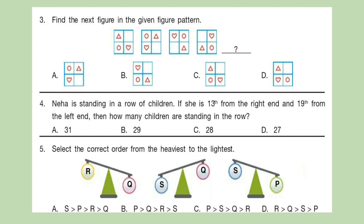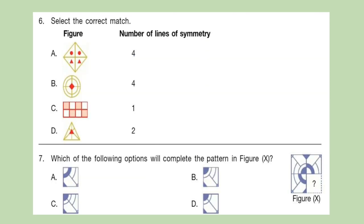Question 4: Neha is standing in a row of children. If she is 13th from the right end and 19th from the left end, then how many children are standing in the row? Question 5: Select the correct order from the heaviest to the lightest. Question 6: Select the correct match. Column 1 consists of figures, column 2 shows number of lines of symmetry.